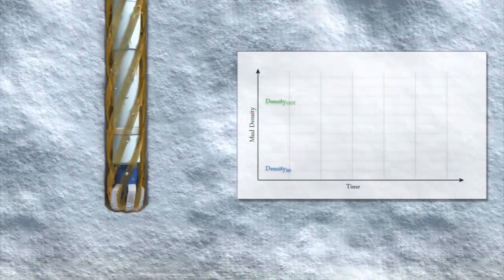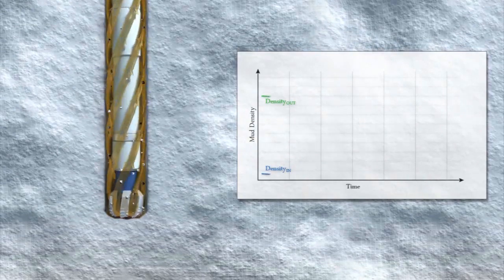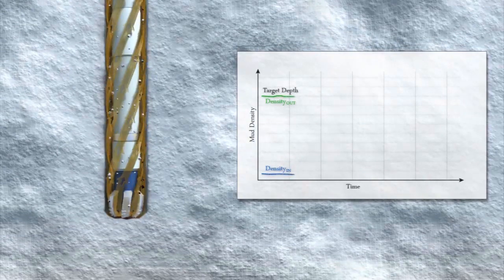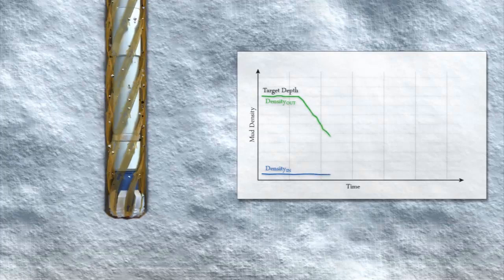Monitoring density trends in and out of the wellbore at target depth can provide a clear indication that all cuttings have been removed and it is safe to pull out of hole.